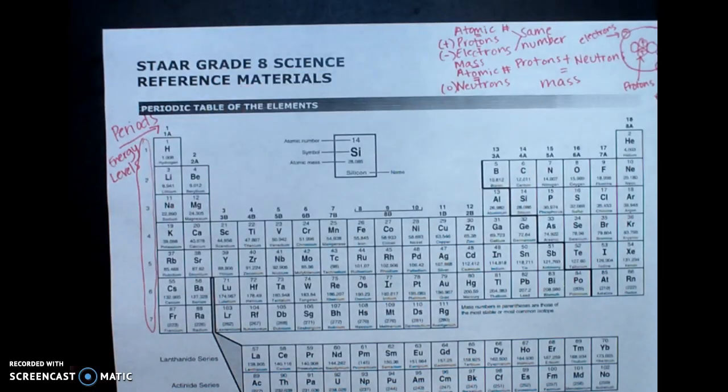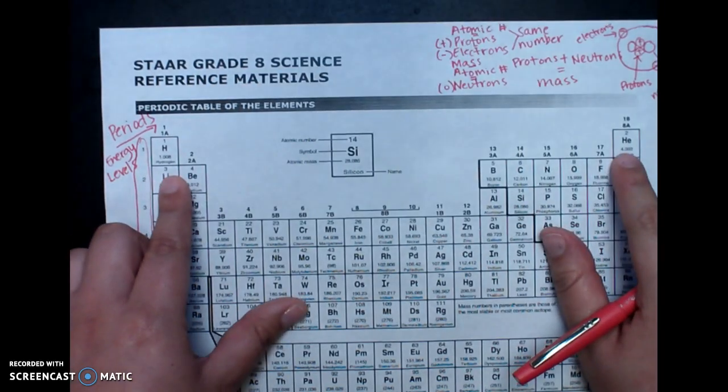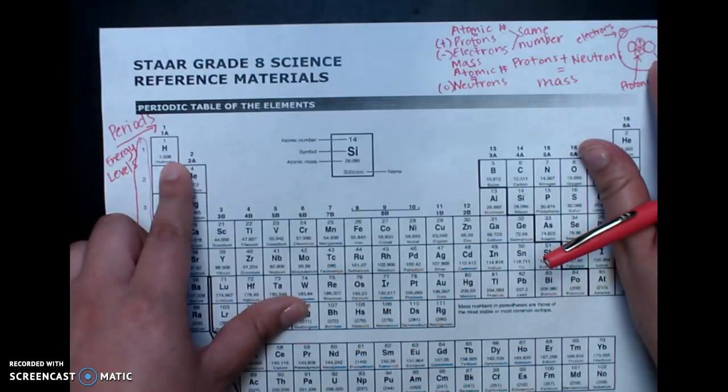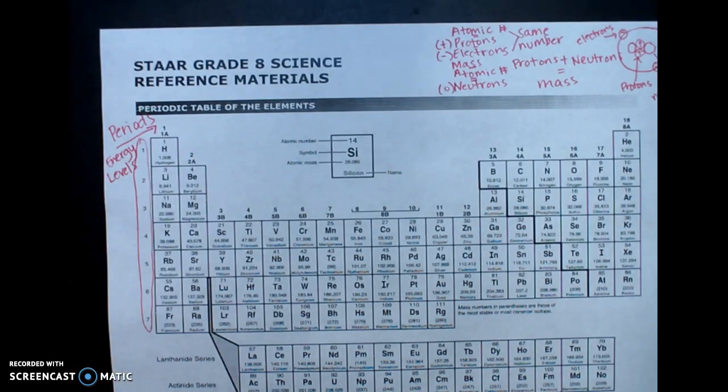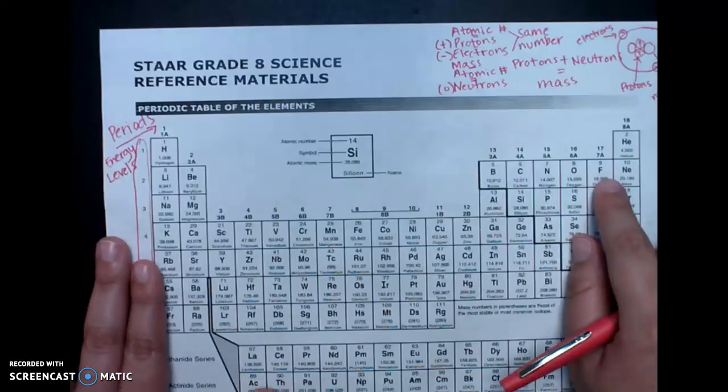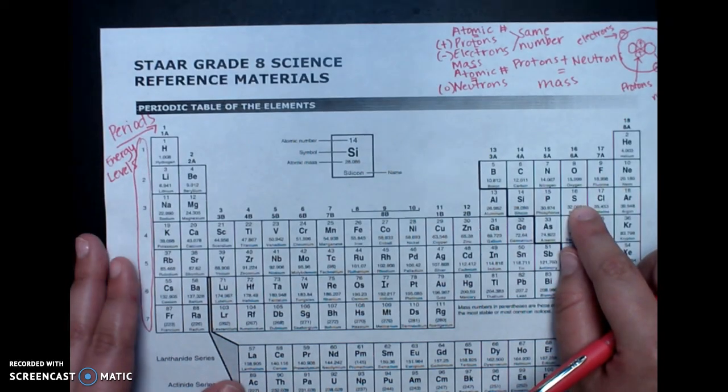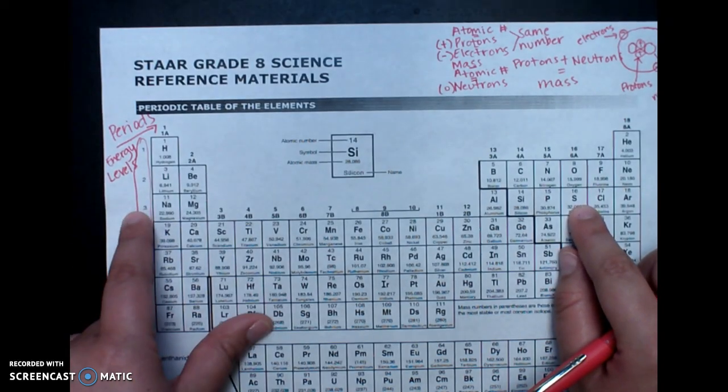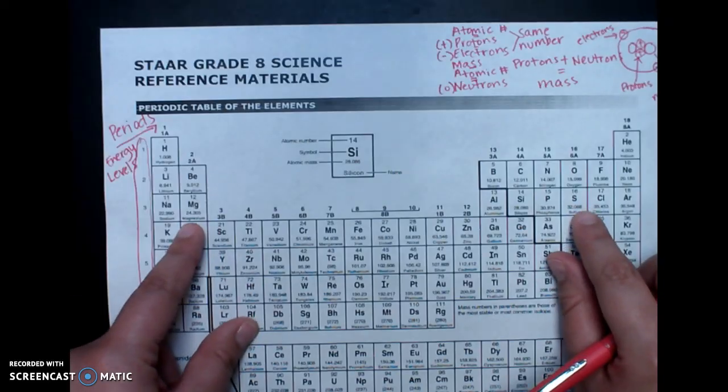So for example, in the first row, they only have one energy level. For example, like helium. Helium only has one energy level going around it. If we come over here to let's say sulfur, sulfur has three, because it's in the third row in the third period. Which is pretty basic.